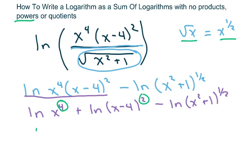So I'm going to have 4 ln of x plus 2 times ln of x minus 4 minus 1 half ln of x squared plus 1. And that's your final answer.